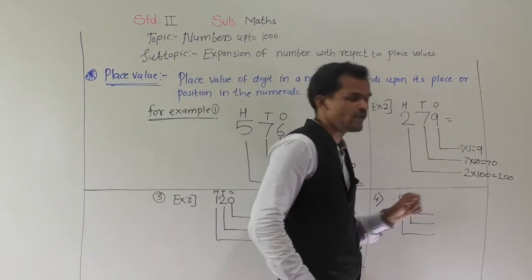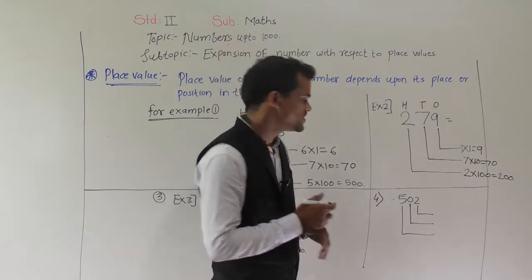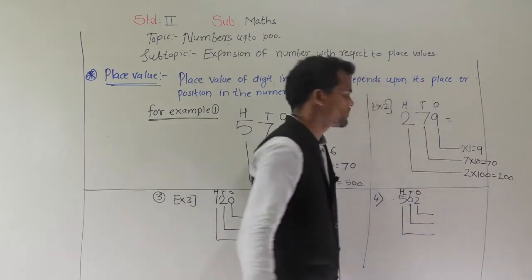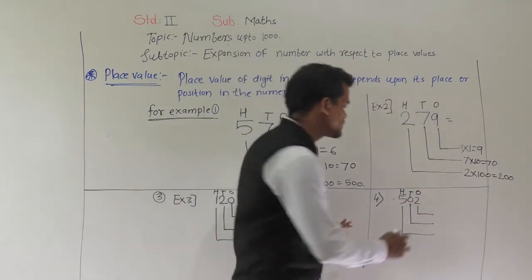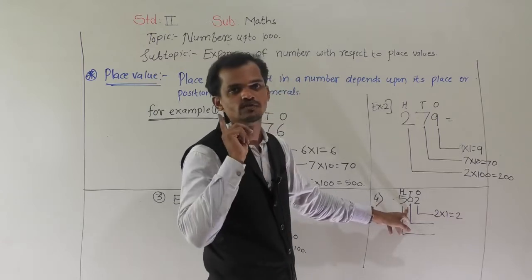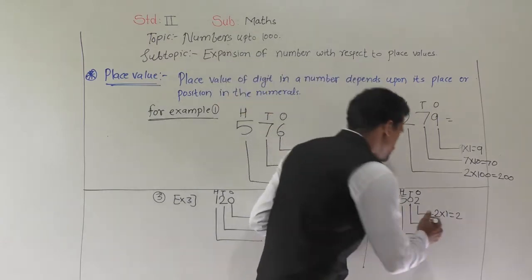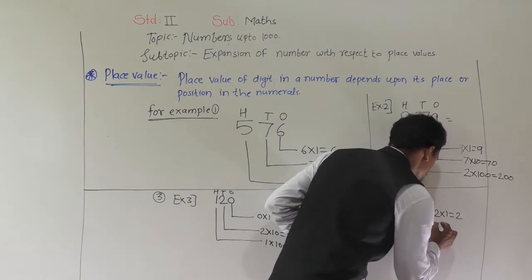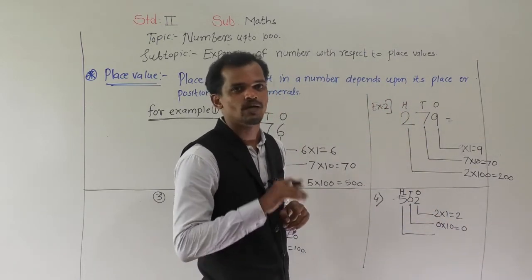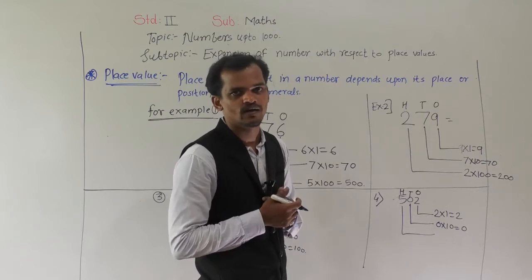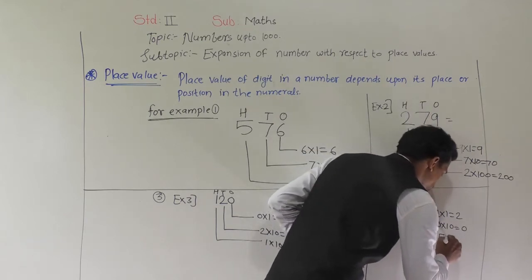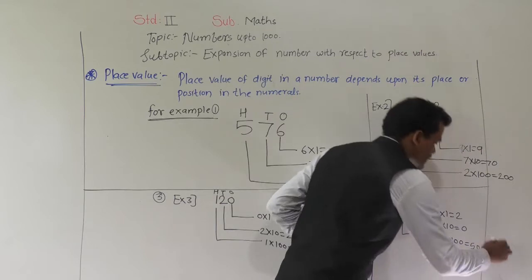Next example: 502. First, see the position of each digit — 2 comes at ones place, 0 comes at tens place and 5 comes at hundreds place. Place value of 2 is: 2 times 1 is equal to 2. We know the place value of 0 is always 0, so 0 times 10 is equal to 0, because any number multiplied by 0, the answer will be 0. 5 comes at hundreds place, so 5 times 100 is equal to 500.